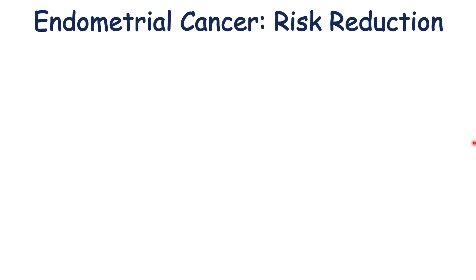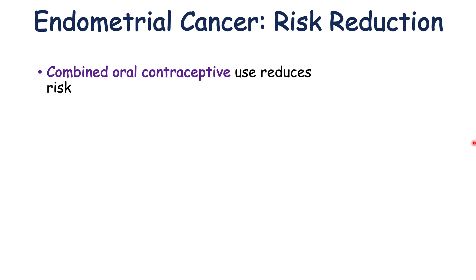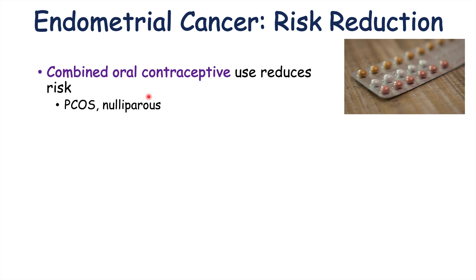Along with these risk factors, there are certain things that can reduce the risk of endometrial cancer. Combined oral contraceptive use reduces the risk. Combined oral contraceptives have both estrogen and progesterone. The levels of estrogen in combined oral contraceptive pills are actually lower than those a patient would be exposed to during a menstrual cycle, and these pills also have progesterone, which is protective against estrogenic effects on the endometrium. These are especially important in patients who experience anovulation, such as those with polycystic ovary syndrome, and in nulliparous patients.